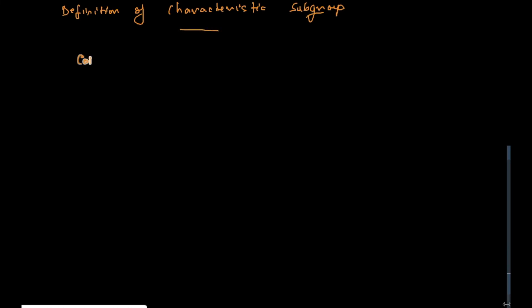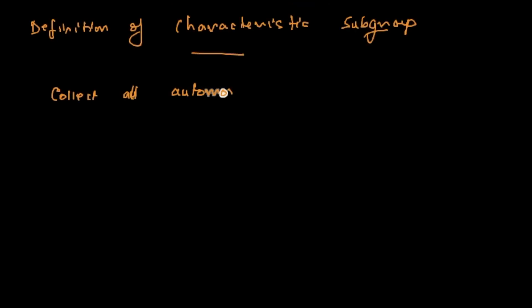What is the characteristic subgroup? Well, first, collect all automorphisms - all maps with that special property that preserves the group structure. All automorphisms of G to itself. There are many such functions possibly. Collect all of them inside a set. Let's call that set Aut(G). This is the collection of all automorphisms of a group to itself.